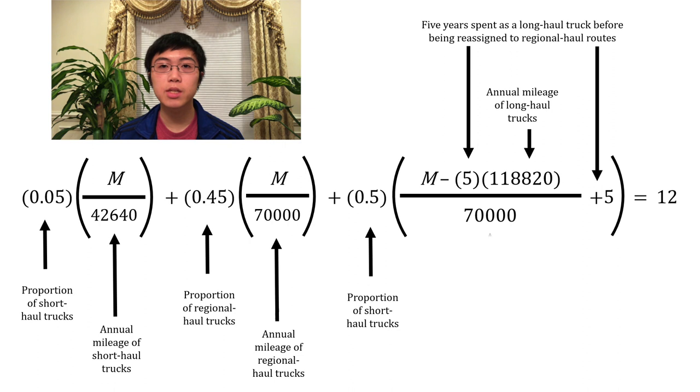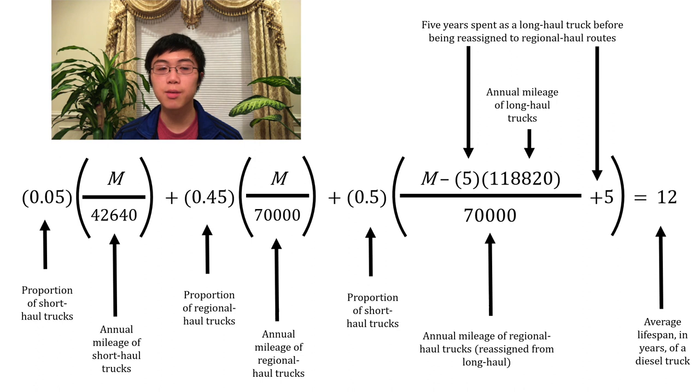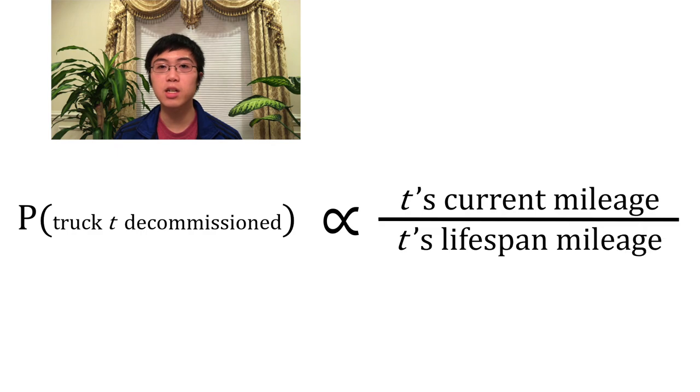The necessary research has not yet been performed to allow us to do these calculations for electric trucks, so we decided to go with the largest currently experimentally viable number we could find, which was 1 million miles. Finally, we recognize that a truck could be spontaneously put out of commission for any number of reasons, so we introduce a probability that each truck breaks down every year as a function of its mileage.